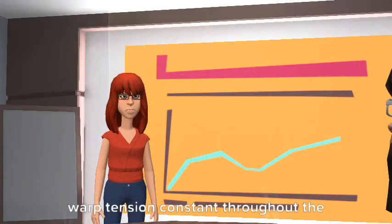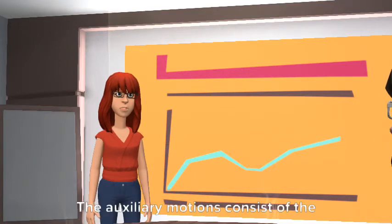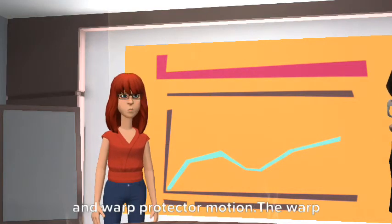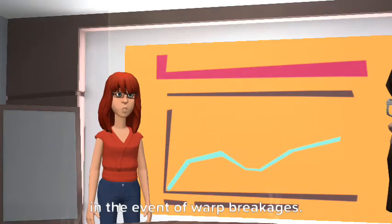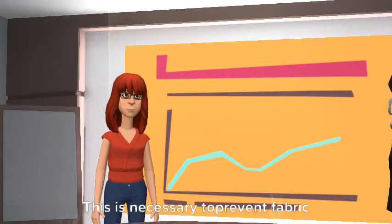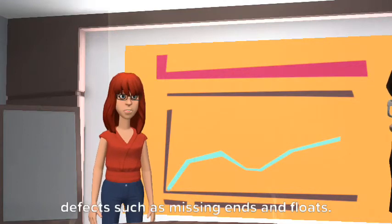The auxiliary motions consist of the warp stop motion, weft stop motion, and warp protector motion. The warp stop motion is used to stop the loom in the event of warp breakages. This is necessary to prevent fabric defects such as missing ends and floats.